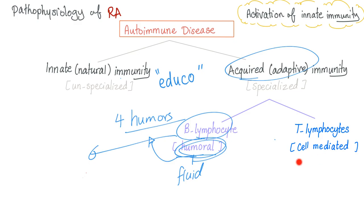Helper T cells recognize antigens, stimulate regulatory/suppressor T cells, and stimulate B cells — so T helper stimulates both T and B lymphocytes. B lymphocytes produce antibodies, which is great against bacteria but horrible when the body attacks itself. We call these autoantibodies — 'auto' meaning self.